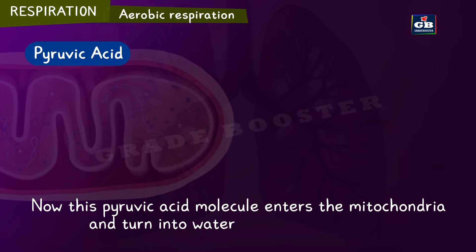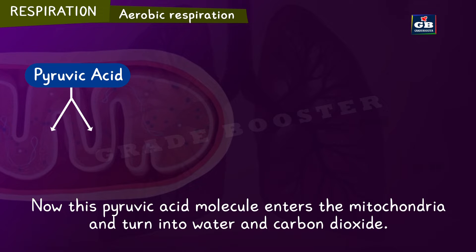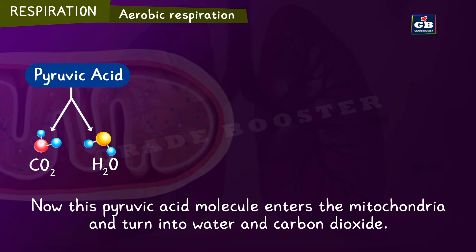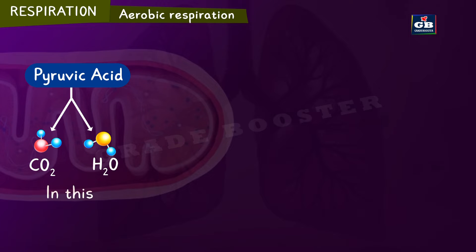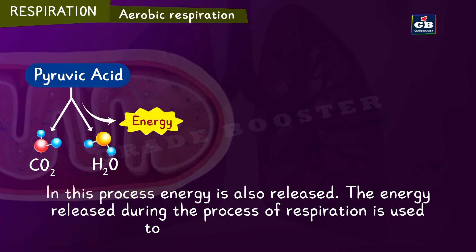These pyruvic acid molecules enter the mitochondria. Inside the mitochondria, these pyruvic acid molecules turn into water and carbon dioxide. In this step, energy is released.